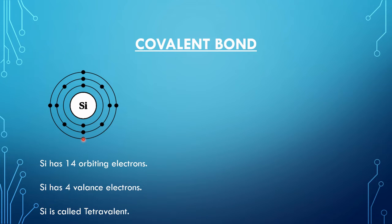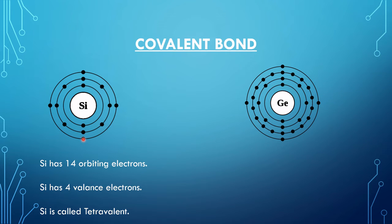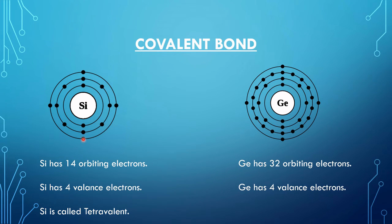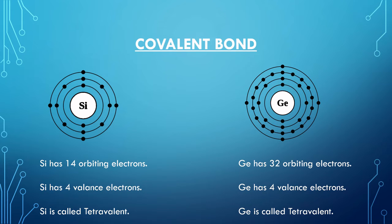The Bohr model for germanium shows it has 32 orbiting electrons. Germanium also has four valency electrons in the outermost shell — this one, this one, this one, and this one — and it is also called tetravalent. Silicon has 14 orbiting electrons and 4 valency electrons, and germanium has 32 orbiting electrons and 4 valency electrons; both are called tetravalent.